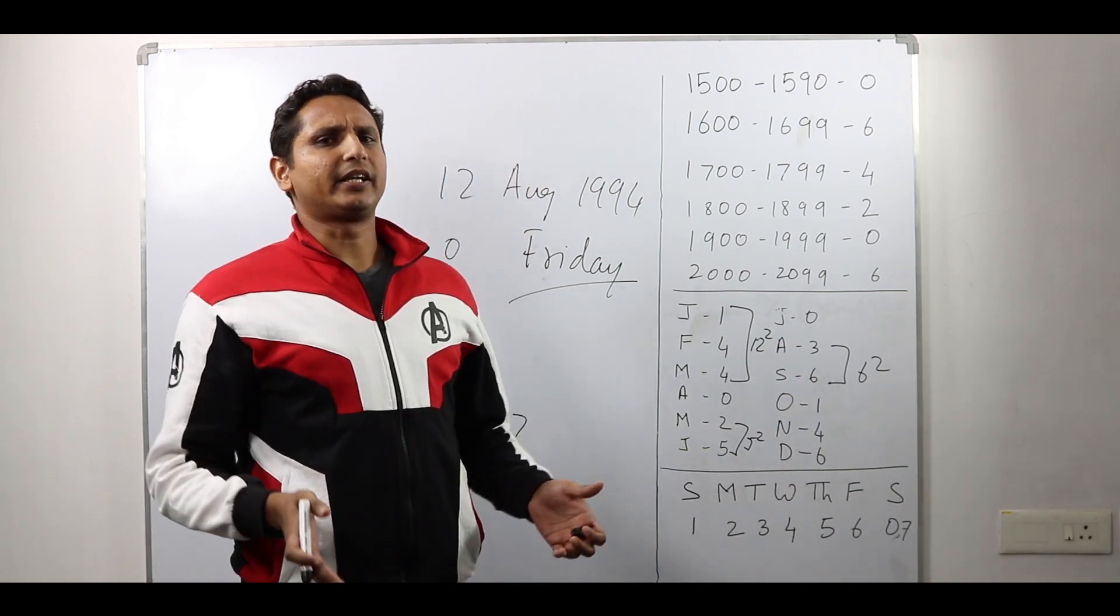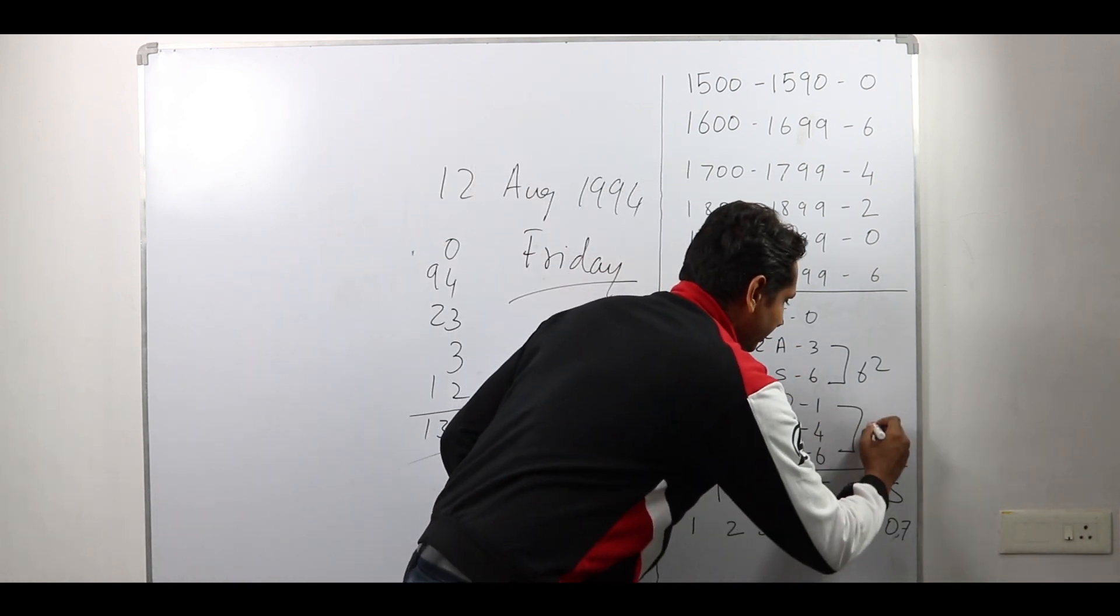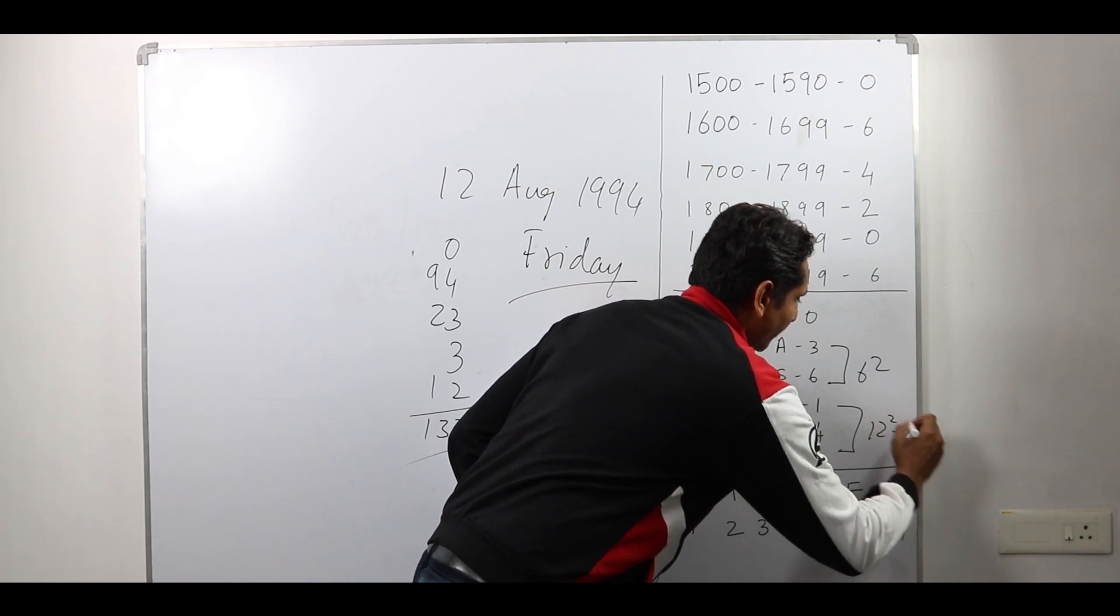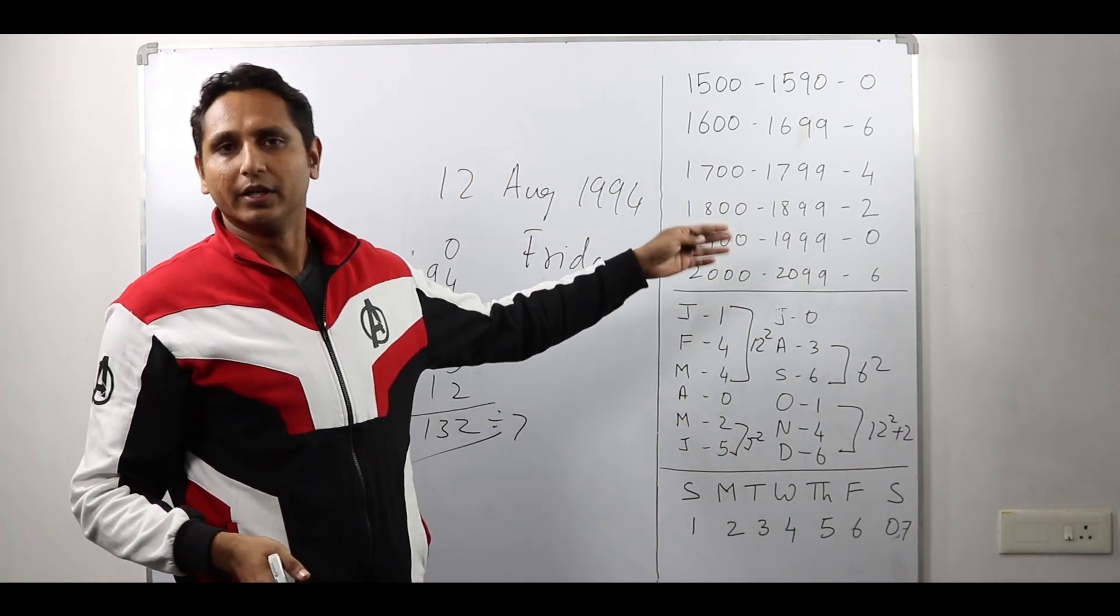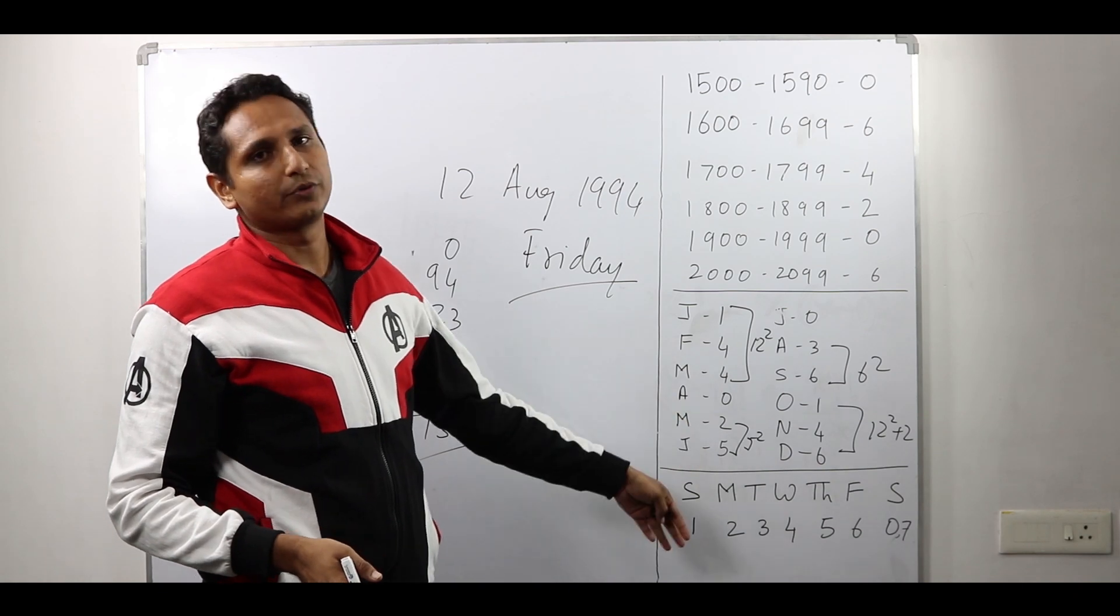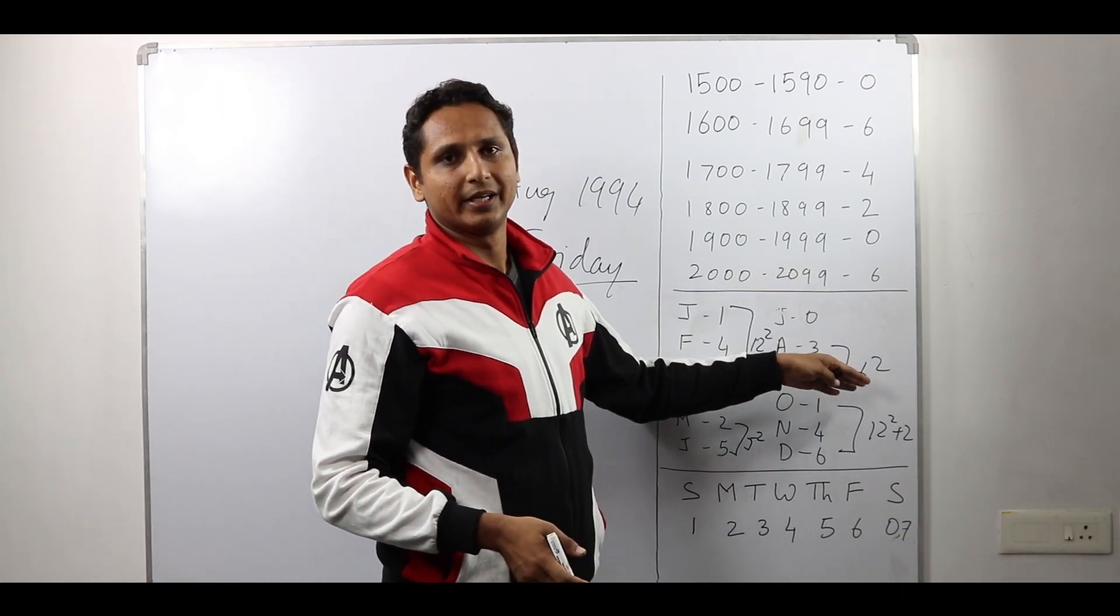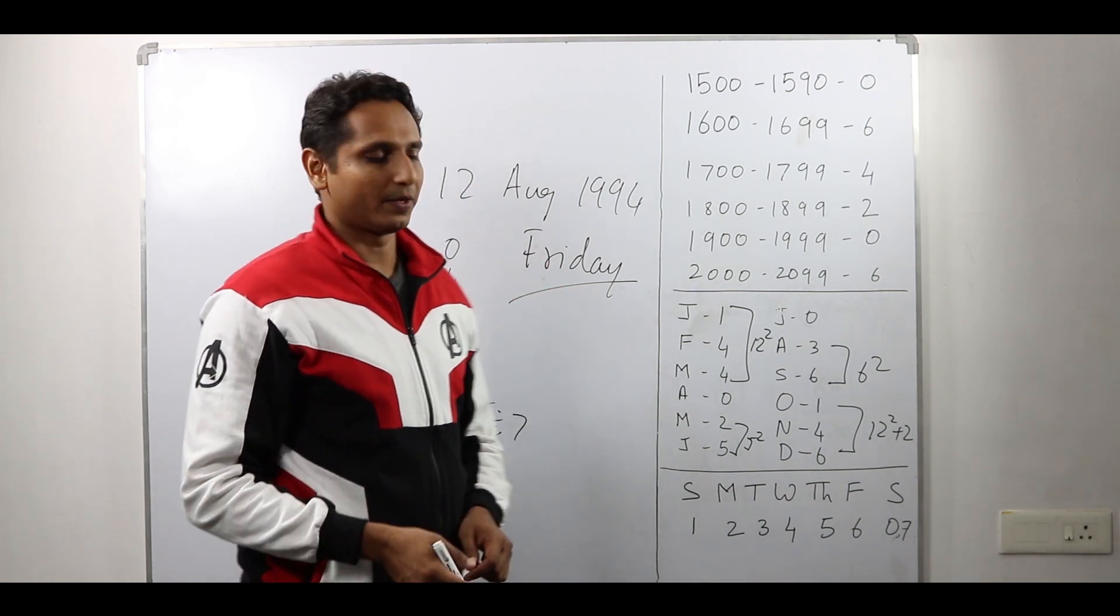146, I can write it as 12 square plus 2. So this is how I remember. I remember 12 square, 0, 5 square, 0, 6 square and then 12 square plus 2.